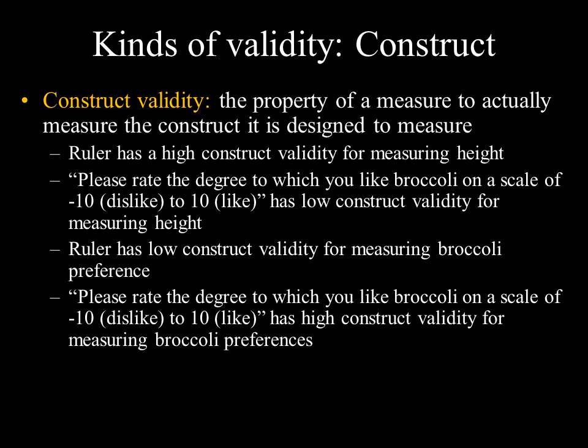Construct validity asks whether your measure is actually tapping into your theoretical construct. For instance, a ruler has high construct validity for measuring height, whereas asking someone to rate how much they like broccoli on a scale of negative ten to ten has low construct validity for measuring height. Conversely, a broccoli preference scale has high construct validity for measuring broccoli preferences.